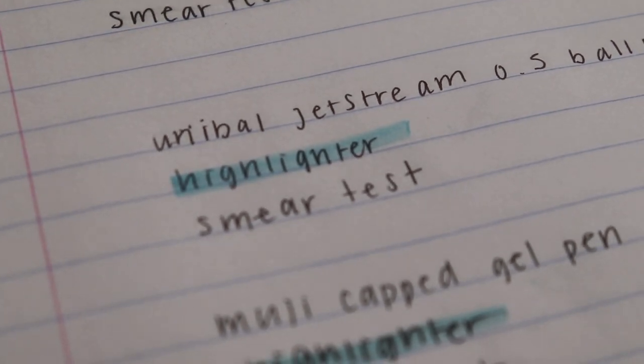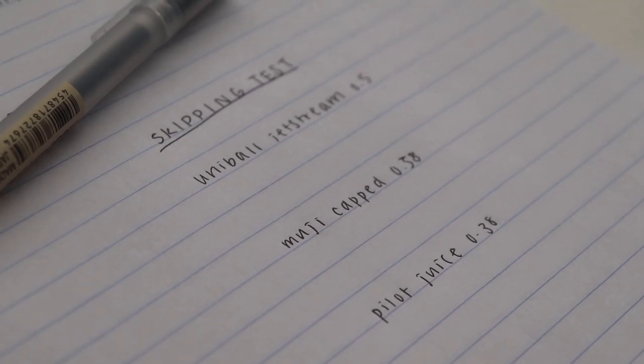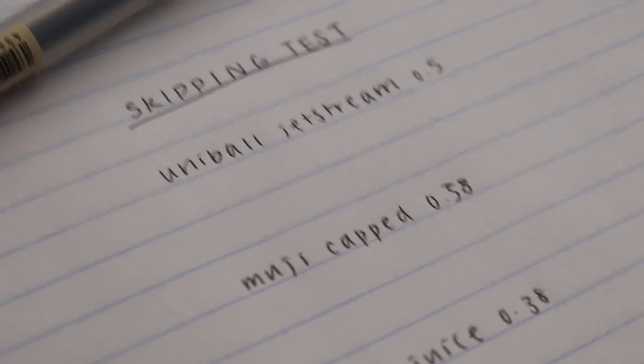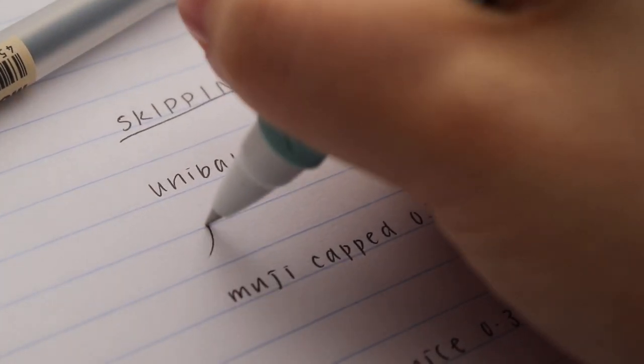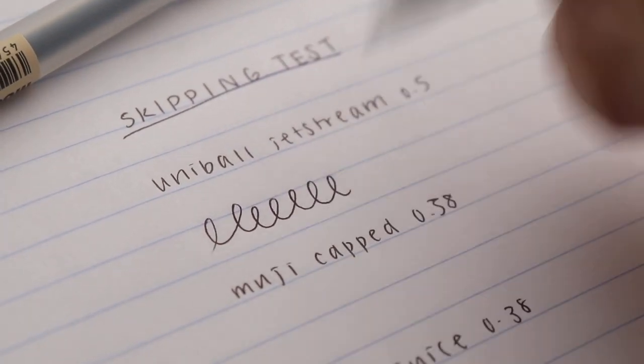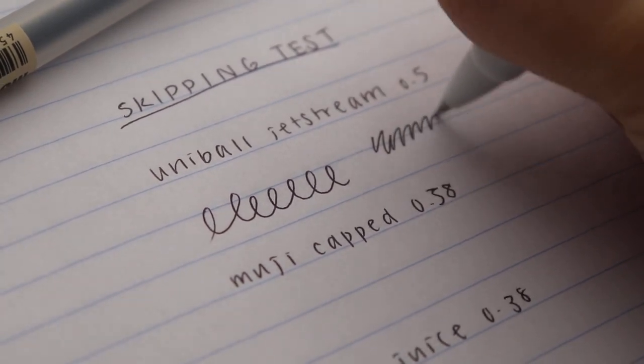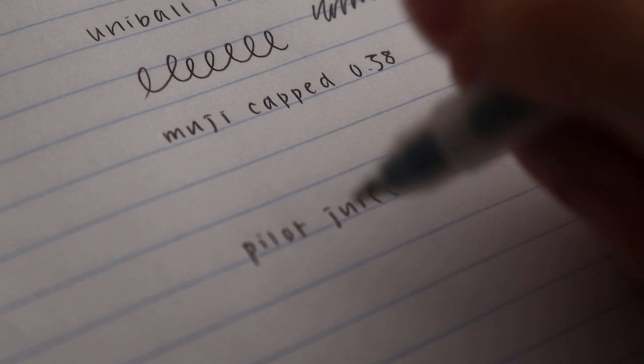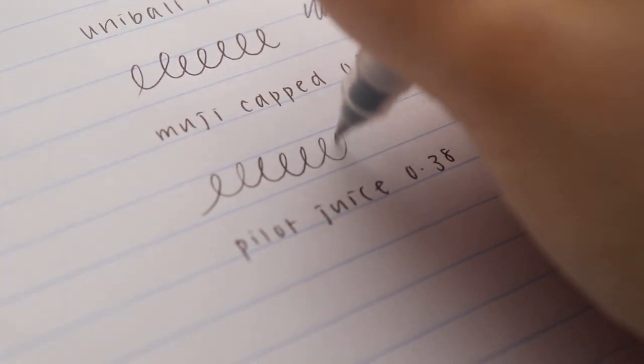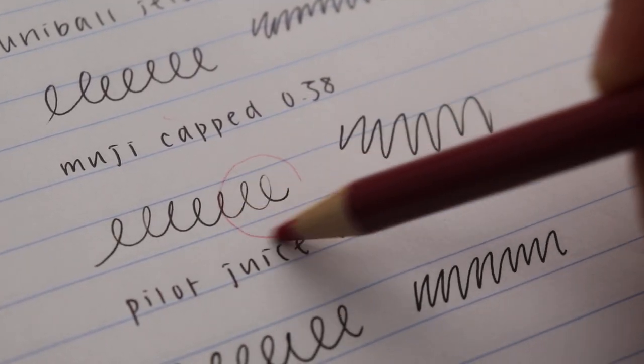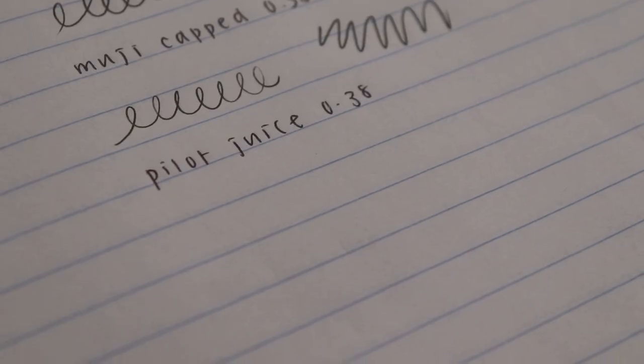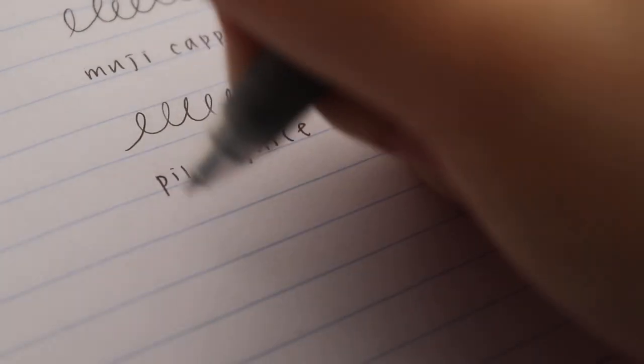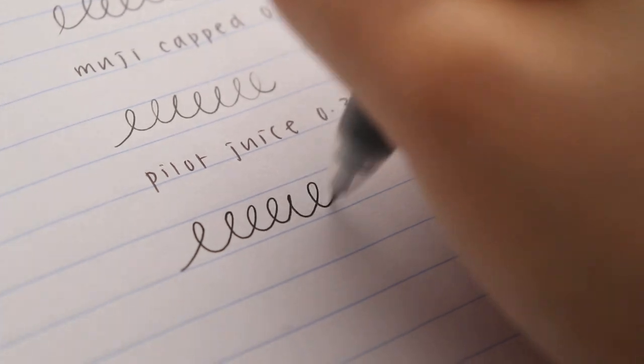As a final comparison, I did a mini skipping test for the three pens. As I mentioned earlier, for a ballpoint, the Jetstream is extremely well known for not skipping at all. The Muji was a little bit worse, and you can definitely see where it started to skip towards the end. The Pilot Juice was also very good at not skipping.